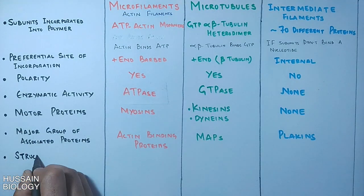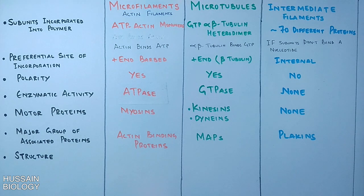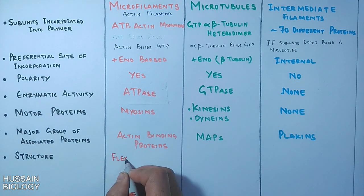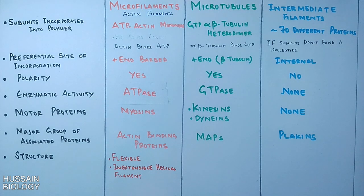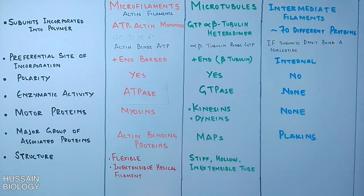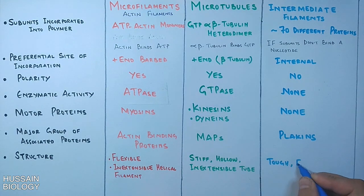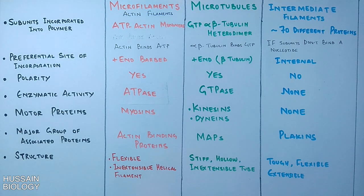Now let's see some structural differences. Microfilaments or actin filaments are flexible and inextensible helical filaments, whereas microtubules are stiff, hollow, and inextensible tubes. Intermediate filaments are tough, flexible, and extensible — different from both microtubules and microfilaments.